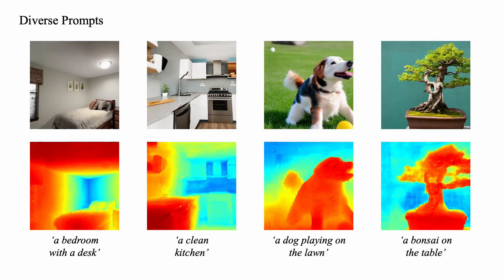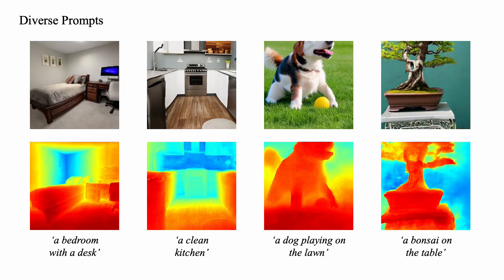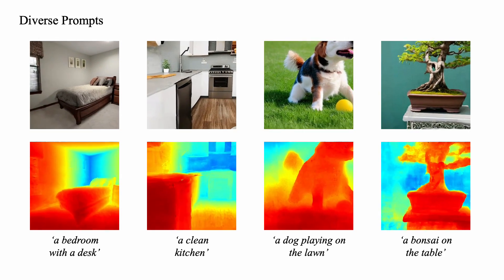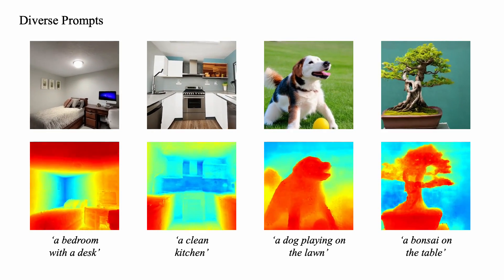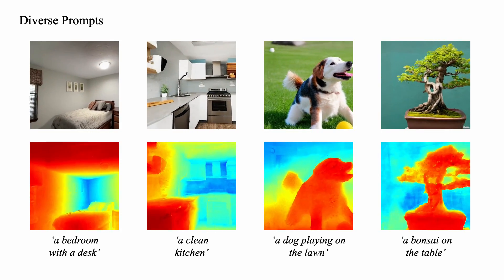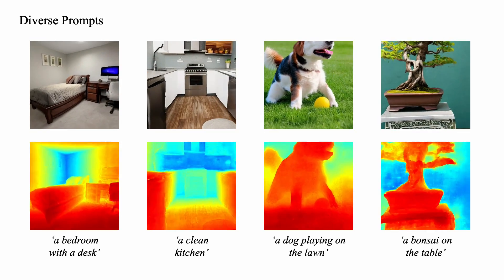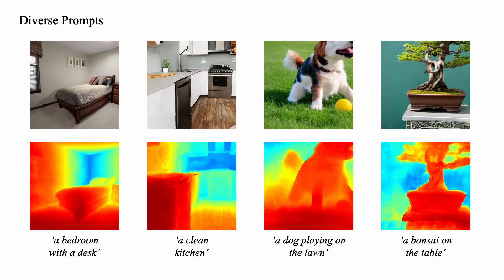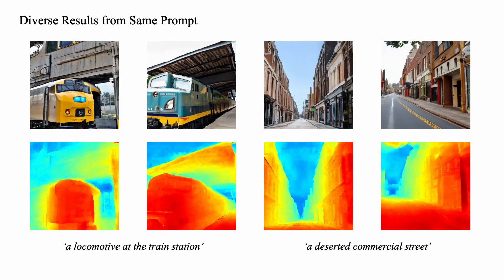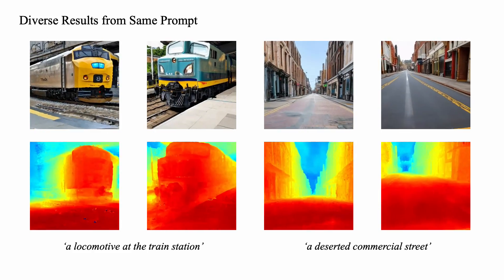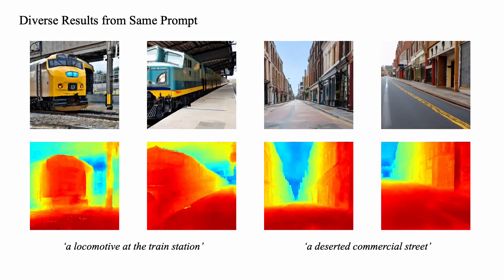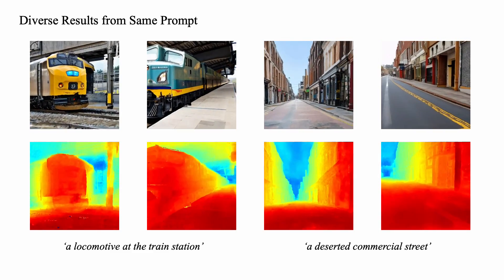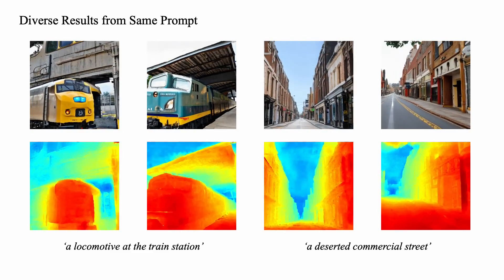Here are some more results generated by our method. Given different text prompts, our method is able to generate high-fidelity indoor and outdoor 3D scenes with realistic textures. Moreover, our method allows generating diverse results from the same text prompt, such as a locomotive at the train station and a deserted commercial street.